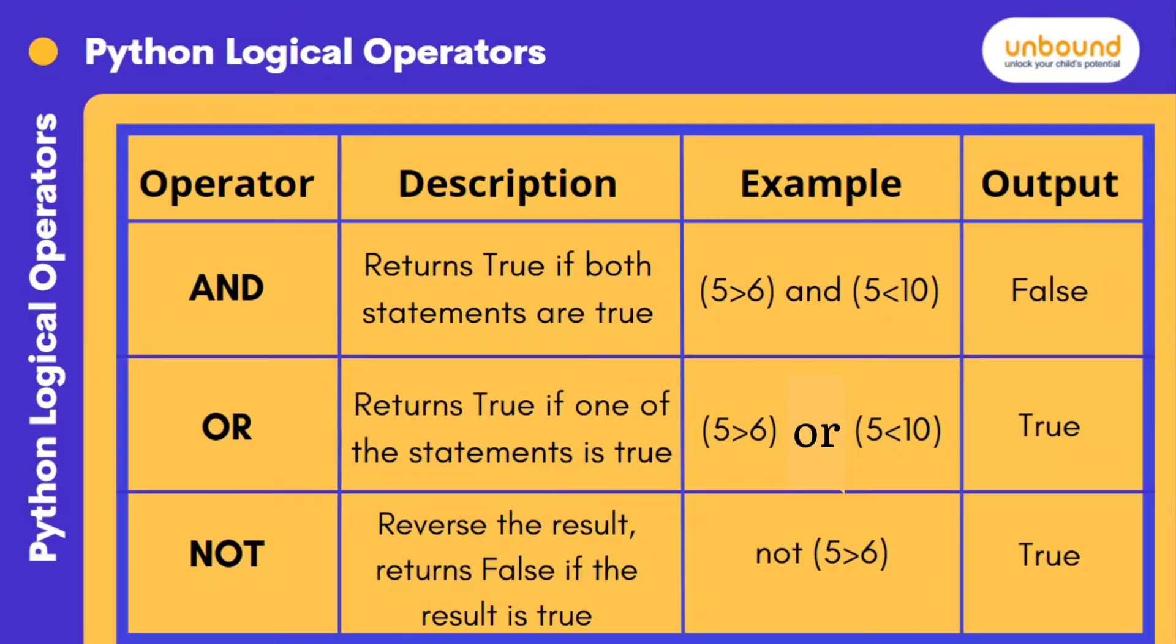Move to not operator. What is the syntax of not? It's not x. Here I have written not x. What was x? 5 is greater than 6. Reverse the result, returns false if the result is true. Now you know that this statement, that 5 is greater than 6, is false. Trick.